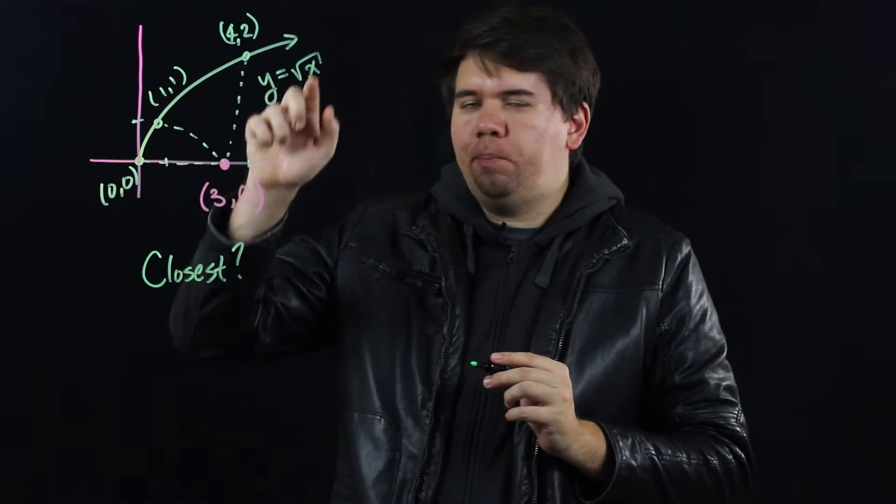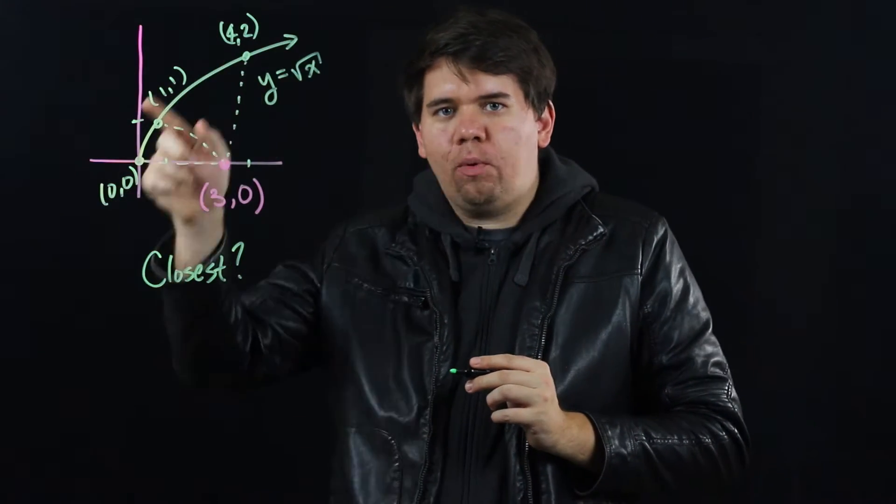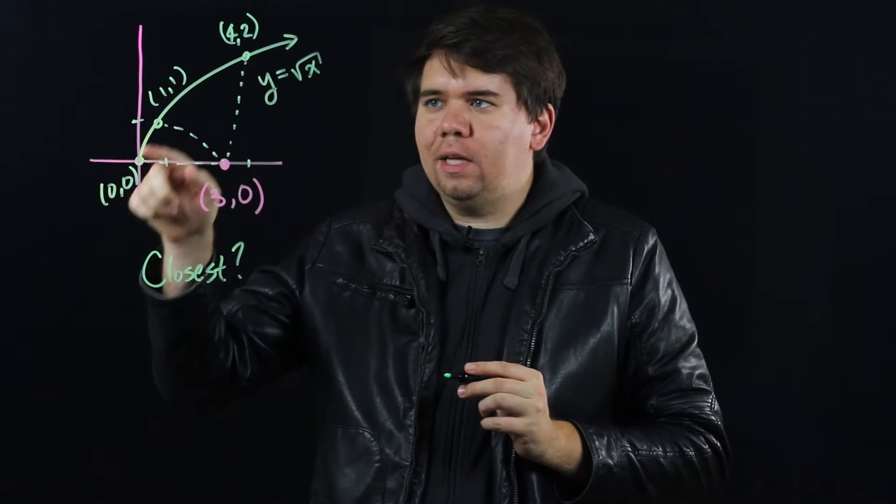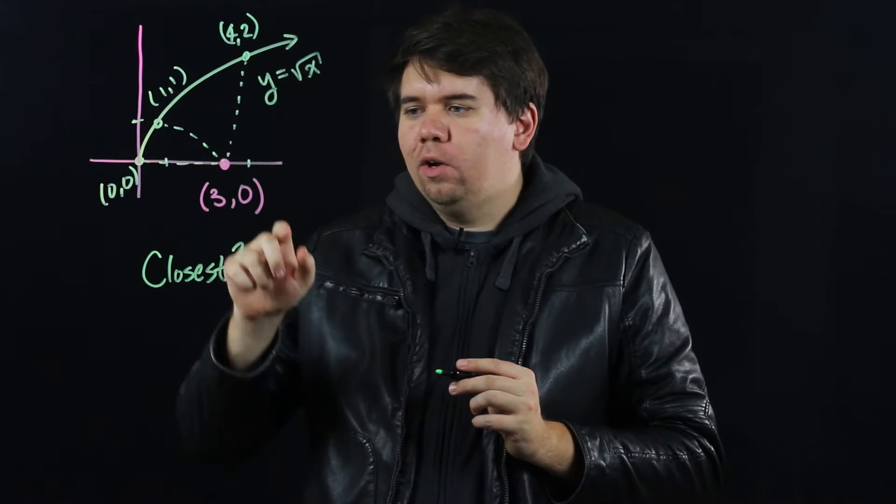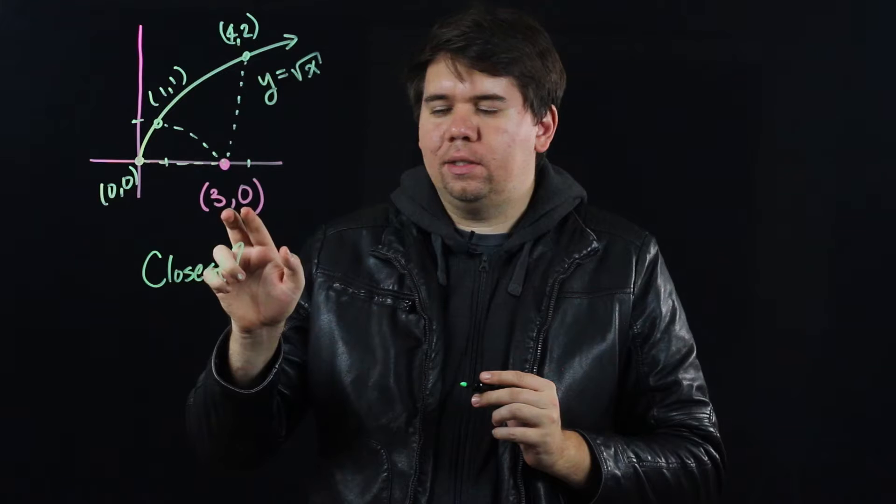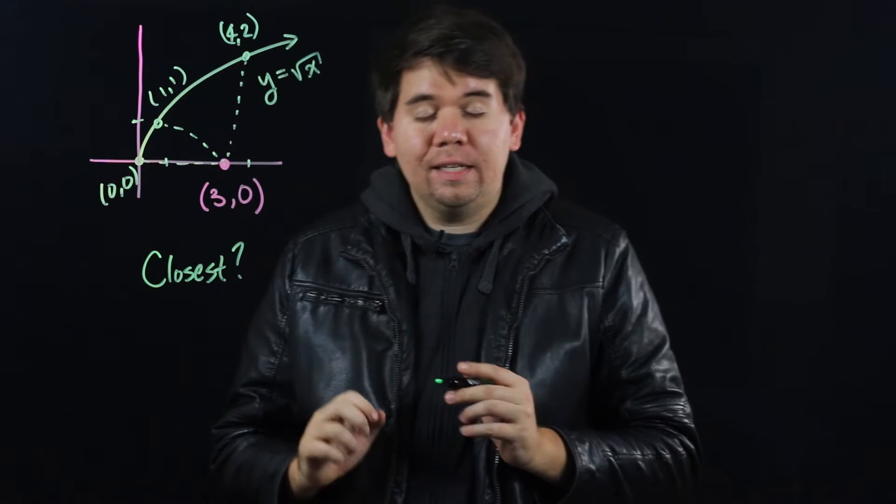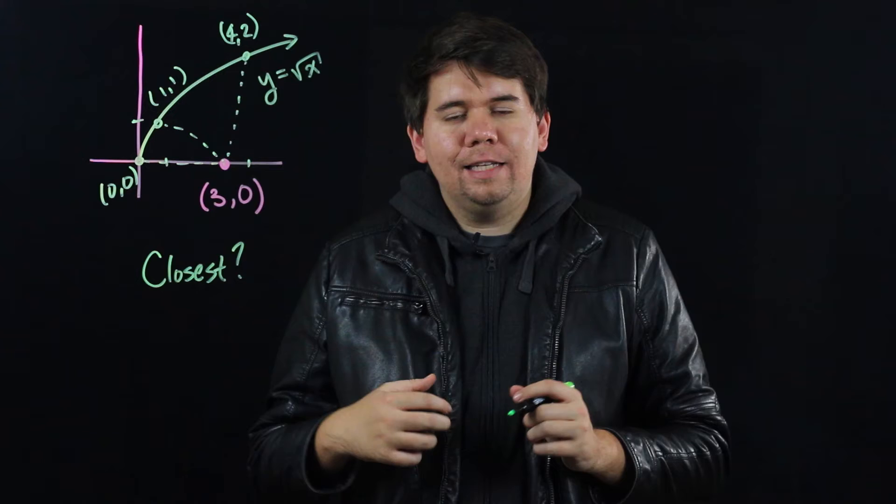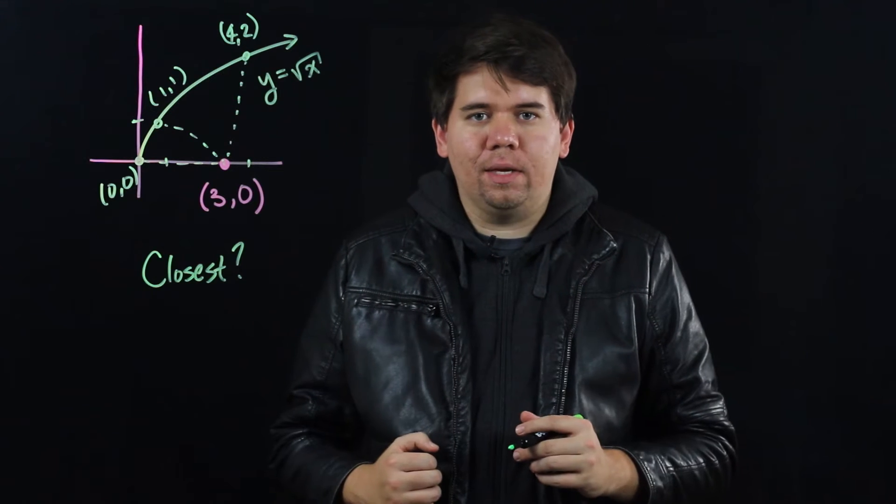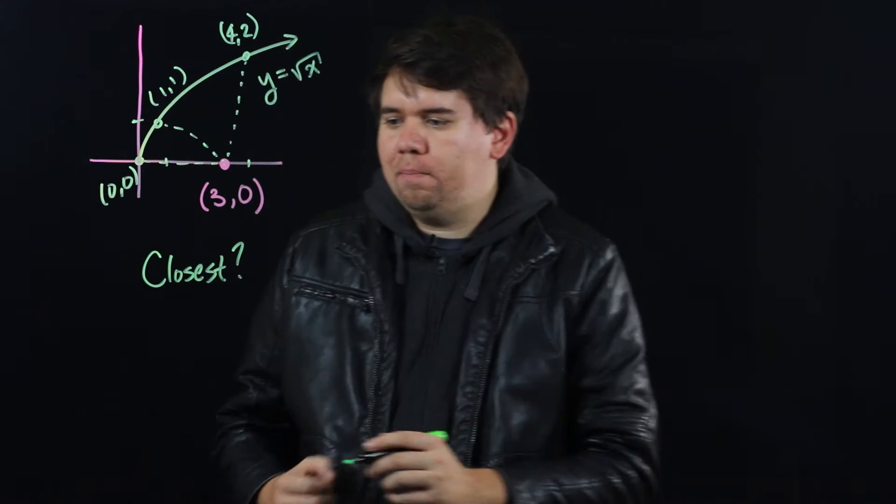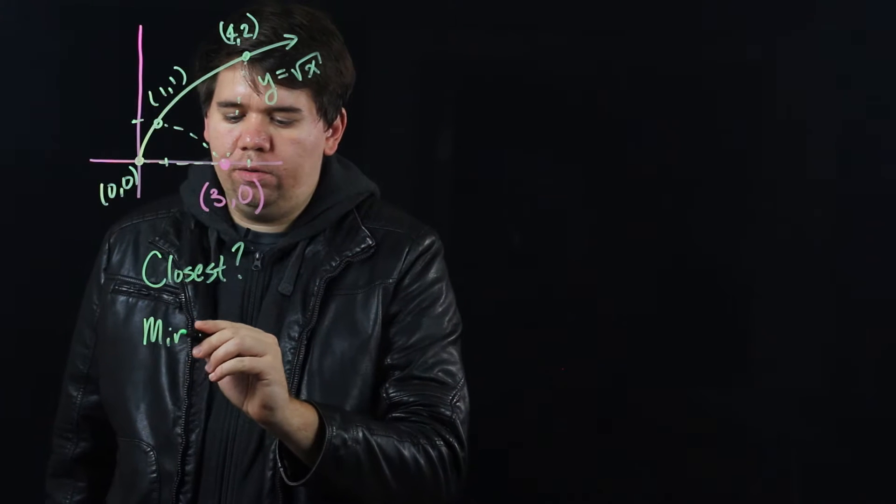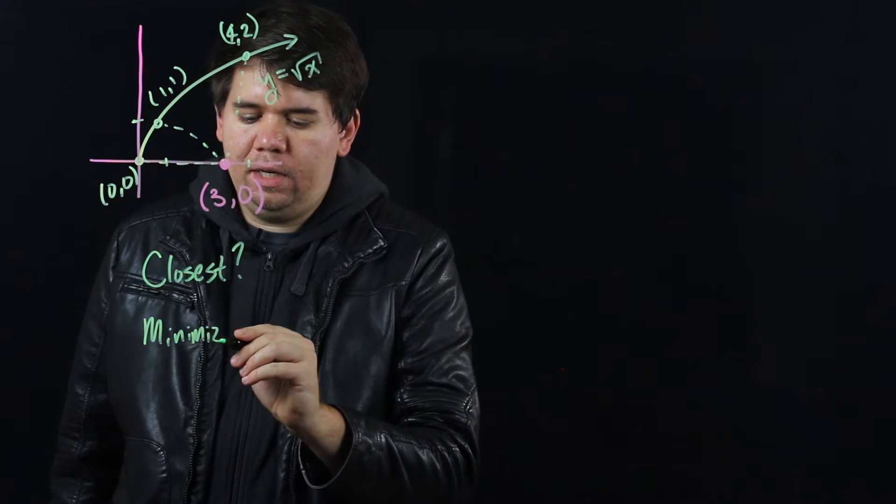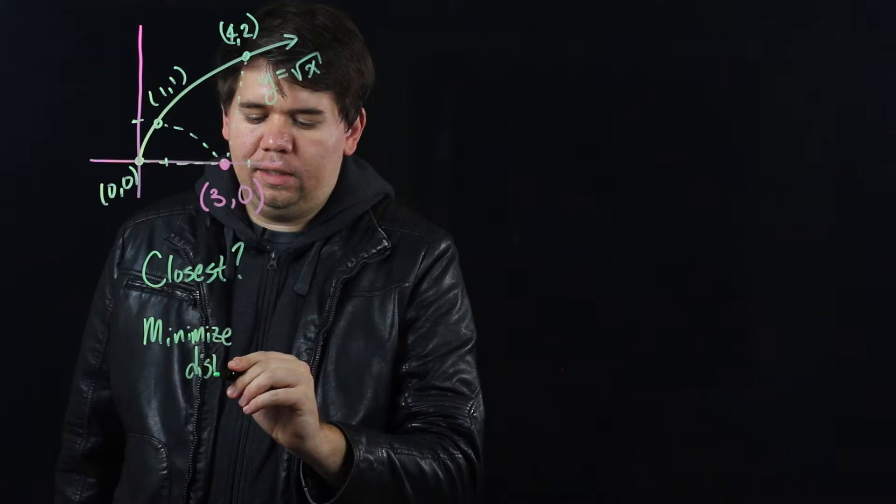So which of these points, and there's infinitely more of all the points on the graph of y equals the square root of x, which one is closest to the point (3,0)? This is an optimization problem. It's asking us to minimize something. In particular, we're trying to minimize distance. To find the closest point, we want to minimize the distance.